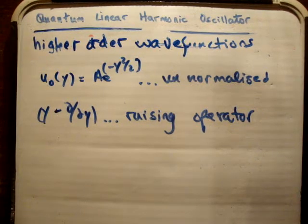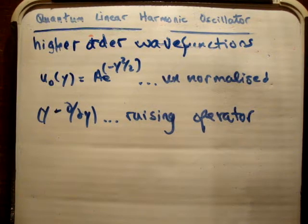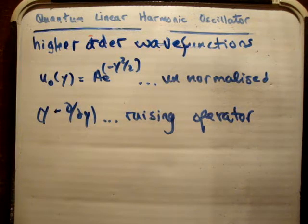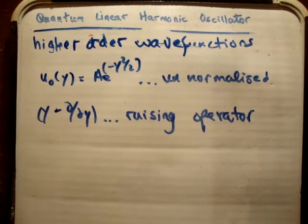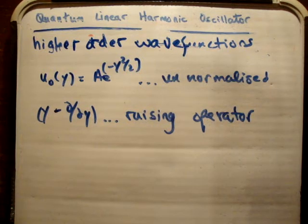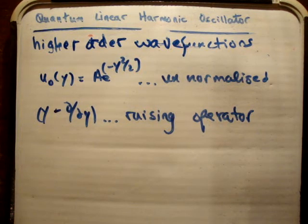In this video I'm going to show you how to generate higher-order wave functions for the 1D quantum linear harmonic oscillator. Up until now we have obtained the zeroth-order wave function, found that there exist raising and lowering operators, and we also looked at the Hamiltonian — we got a dimensionless Hamiltonian, and as a result a dimensionless Schrödinger equation.